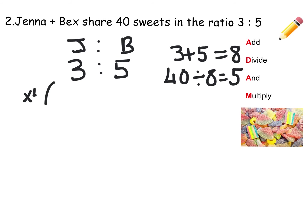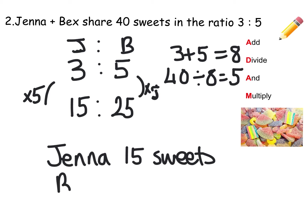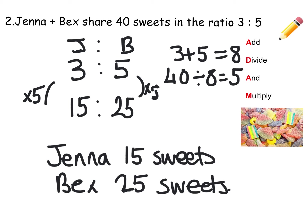Then we multiply: 3 times 5 is 15, and 5 times 5 is 25. So to conclude the question, Jenna gets 15 sweets and Bex gets 25 sweets. And again, 15 add 25 gives you 40.